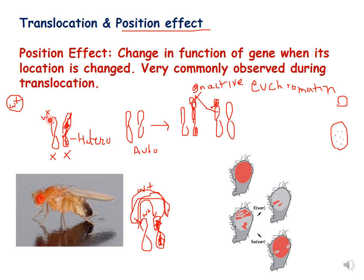The W+ gene was expressing itself when it was on the non-heterochromatized X chromosome. When it gets translocated to the heterochromatized chromosome, it becomes inactive. The euchromatin region of the X chromosome gets translocated to the heterochromatin part, so it stops expressing itself. This results in no expression of the W+ gene and therefore no red eye color in Drosophila.